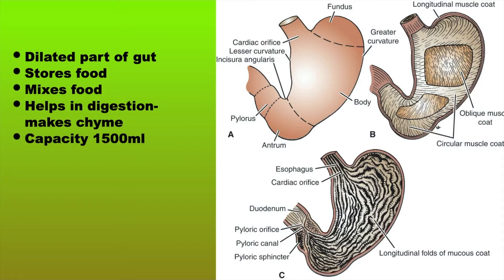The anatomy of the stomach. The stomach is the dilated part of the gut that stores food, mixes food and helps in digestion to make the food that you consume into something called chyme. It has a capacity of 1500 ml.